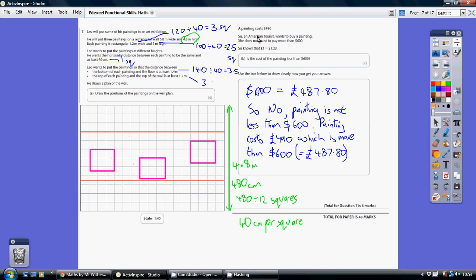Now for part B, a painting costs 490 pounds. Sue wants to buy one. She doesn't want to pay more than $600. Can she afford one? Now we want to turn these dollars into pounds.